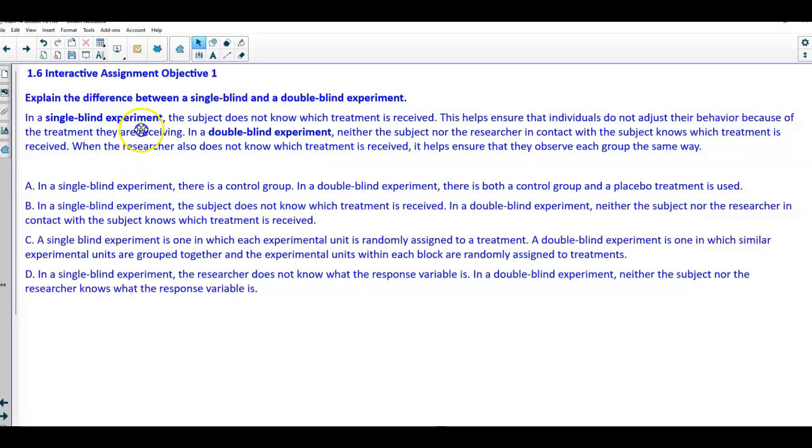In a single blind experiment, the subject does not know which treatment is received. This helps ensure that individuals do not adjust their behavior because of the treatment they are receiving. In a double blind experiment,